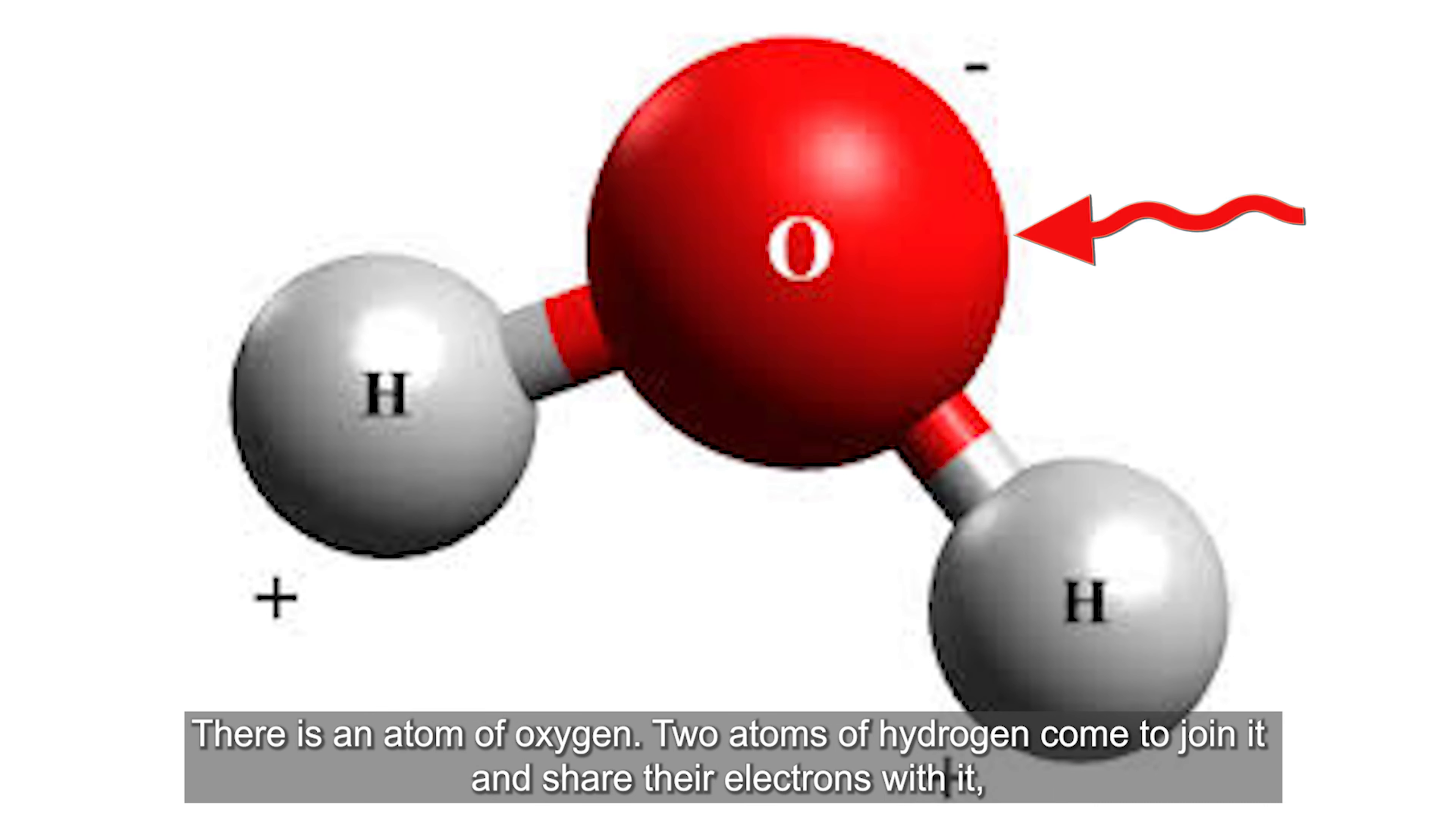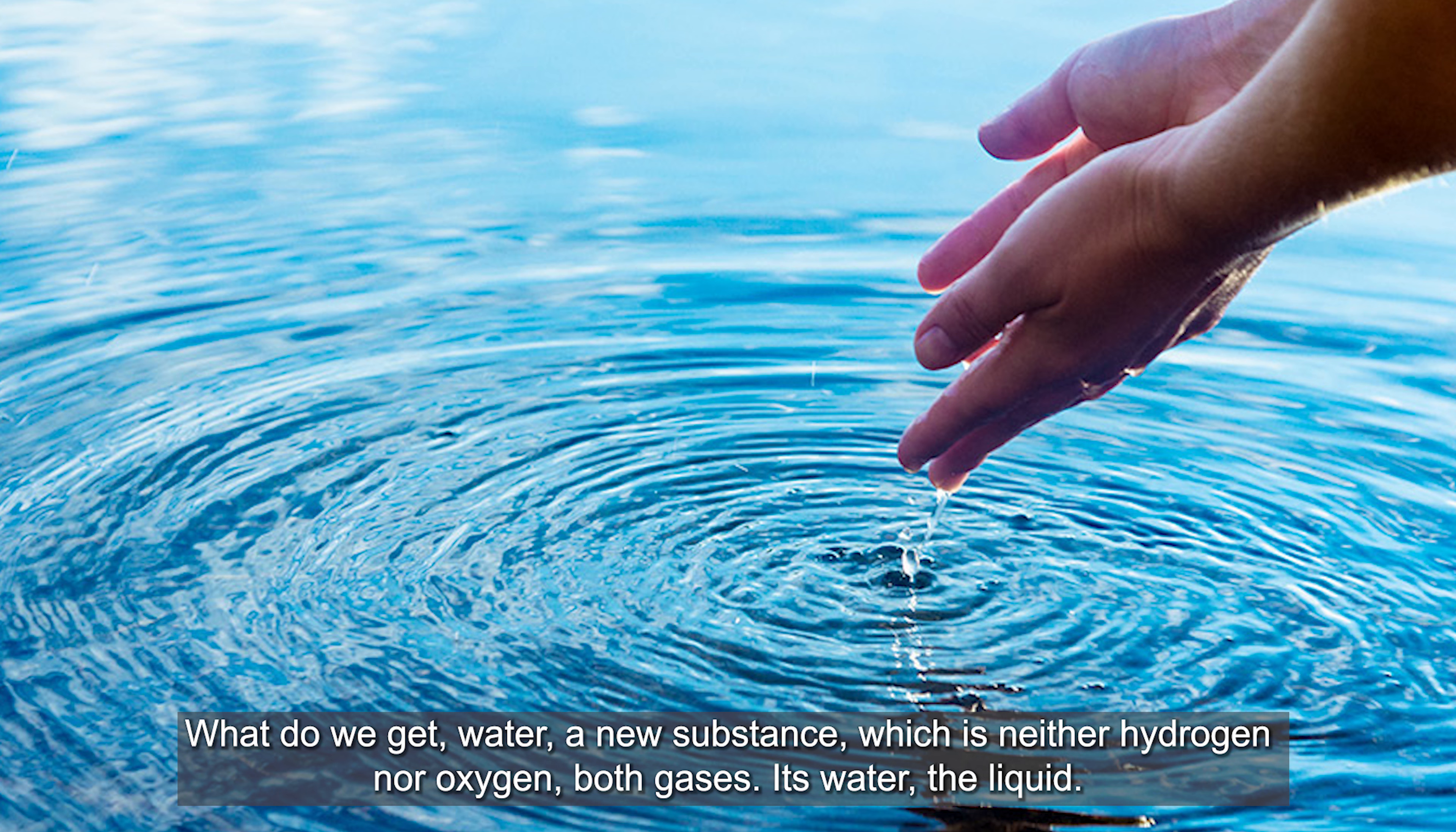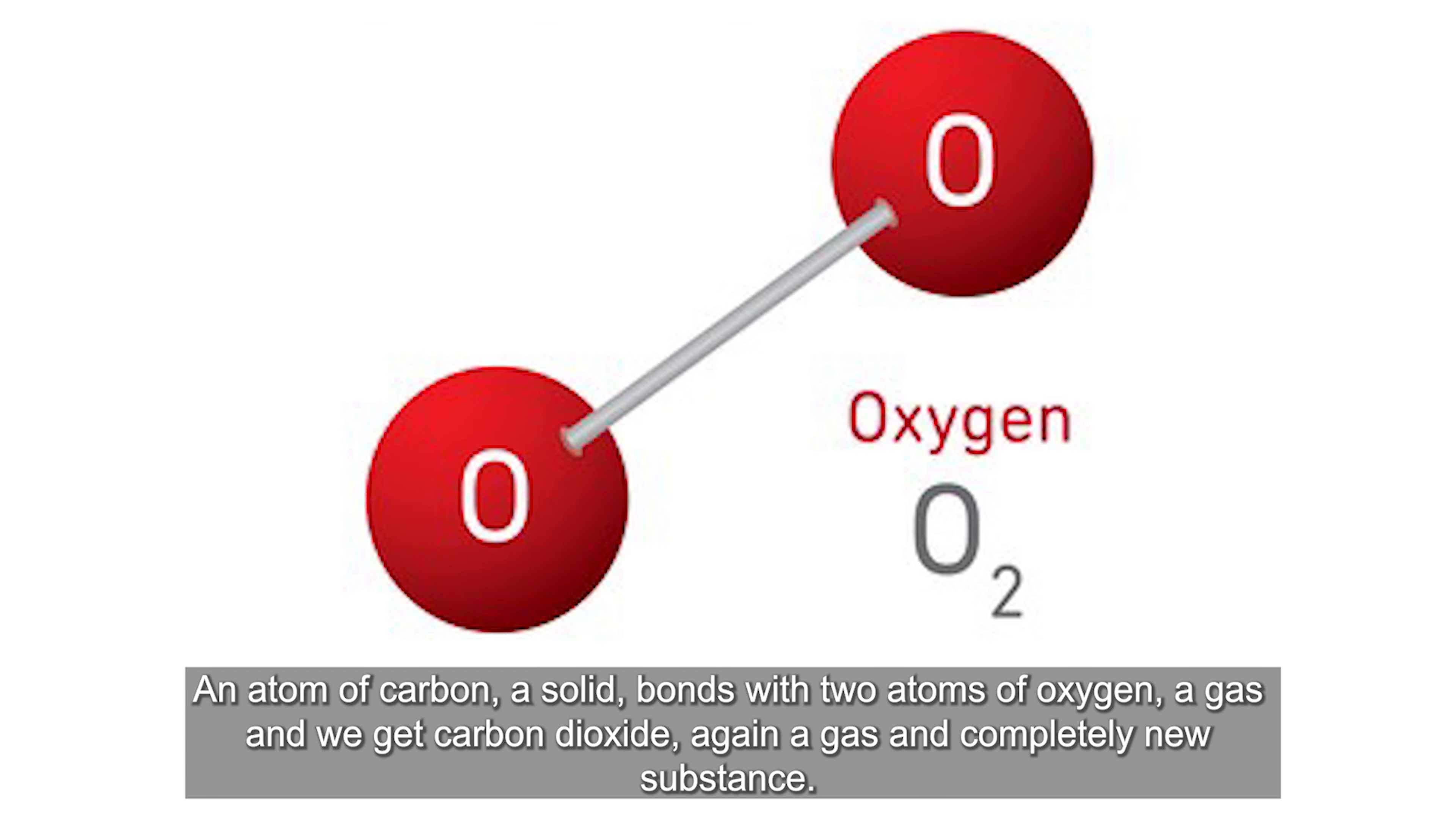Aur atoms interact kaise karte hai? They form bonds with each other by sharing their electrons. Like there is an atom of oxygen and two atoms of hydrogen come to join it and share their electrons with it. What do we get? Water. A new substance which is neither hydrogen nor oxygen both gases. It's water the liquid.